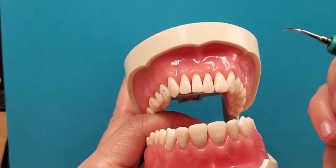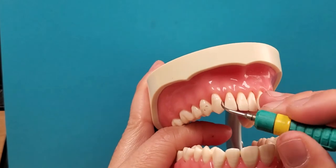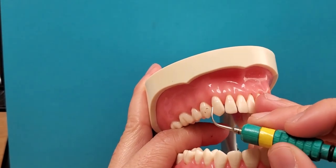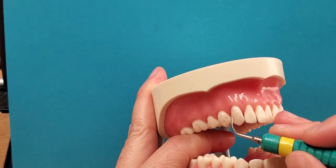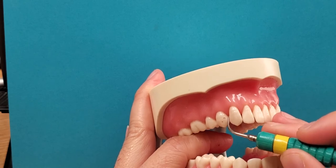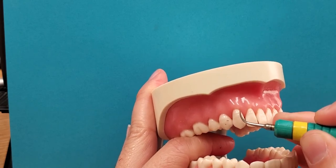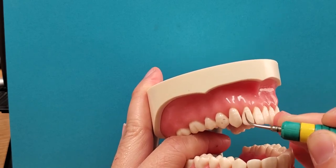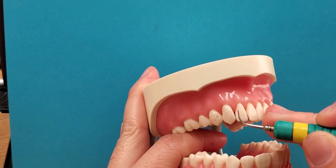My recommendation for beginning ultrasonic instrumentation is to do probe style throughout the sextant that you're working on. Remove everything that you can with probe style.